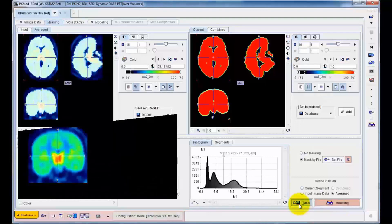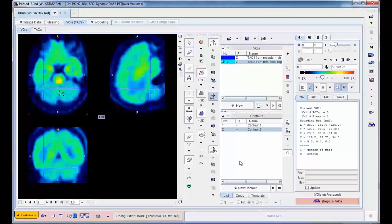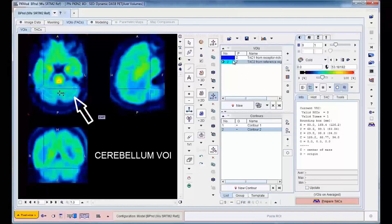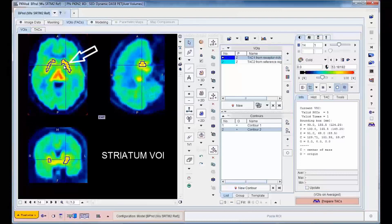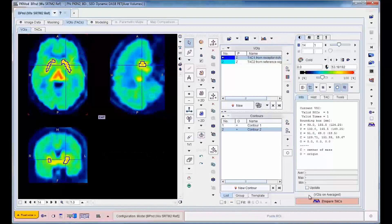The next step is the definition of specific tissue regions for the model. In our example, the cerebellum VOI serves to define the reference signal, and the striatum a representative target tissue signal. The corresponding time activity curves are calculated and visualized on the next page.